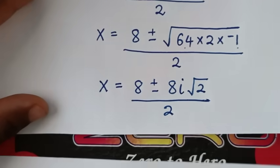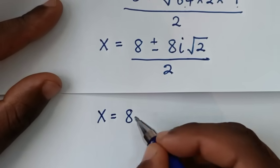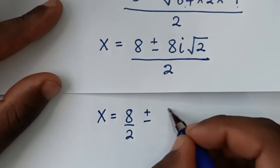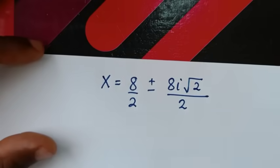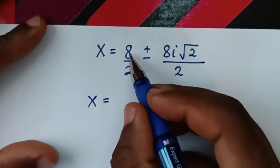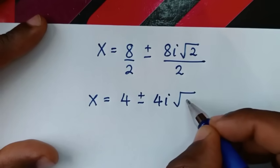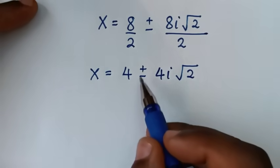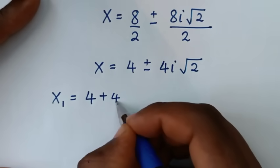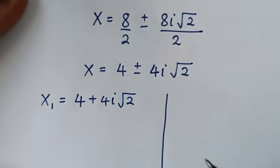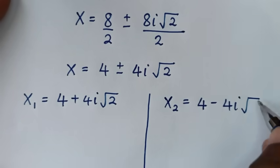Then in the next step, from here, we'll divide by 2 in this part and in this part. So it will be x is equal to 8 divided by 2, plus or minus 8i square root of 2 divided by 2. So it will be x is equal to 4 plus or minus 4i square root of 2. So we'll have two solutions of x. The first value x1 is equal to 4 plus 4i square root of 2, and the second value x2 is equal to 4 minus 4i square root of 2.